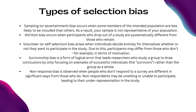Attrition bias occurs when participants who drop out of a study are systematically different from those who remain. Volunteer, or self-selection, bias arises when individuals decide entirely for themselves whether or not they want to participate in the study. Due to this, participants may differ from those who don't — for example, in terms of motivation.